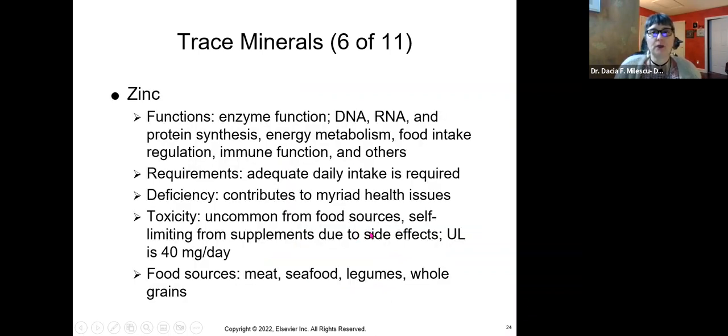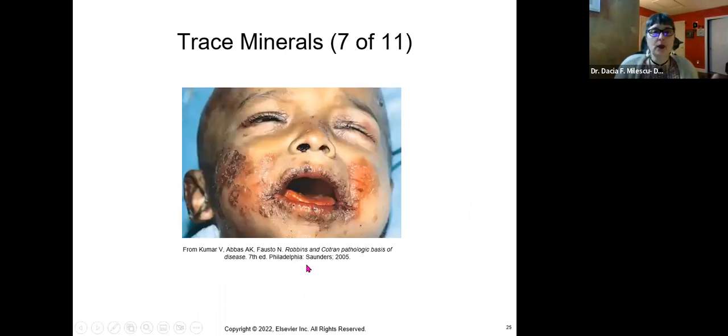Moving on is zinc. Zinc is super important for enzyme function, DNA, RNA, protein synthesis, energy metabolism, and of course, food intake and your immune system function is super important. Like let's say it's flu season, zinc. Zinc is it. You have to take a little bit more zinc. So if you have a deficiency, it can lead to a myriad of issues, including immune system issues. Toxicity is very uncommon from food sources. But if you do supplements, you will have some toxicity if you go above the 40 milligrams per day. Where do you get it from? You get zinc in meat, seafood, legumes, and whole grains. This is what happens when you don't have enough zinc.